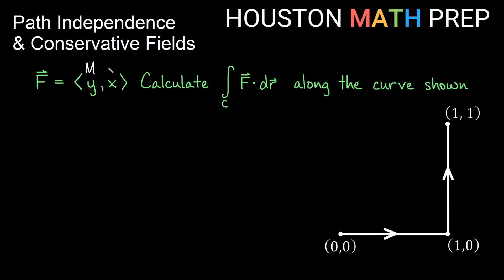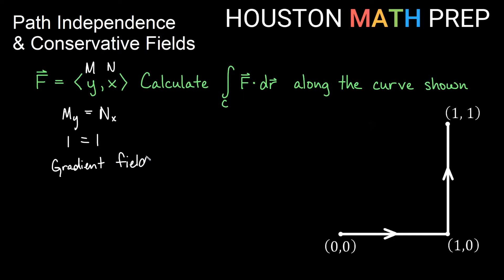So I look at this: m is y and n is x. For something to be a gradient field — path independent — we just need the partial derivative of m with respect to y to equal the partial derivative of n with respect to x. The partial derivative of m with respect to y is 1, and the partial derivative of n with respect to x is also 1. Since those are equal, this is a gradient field, and more importantly in this context, it is path independent.